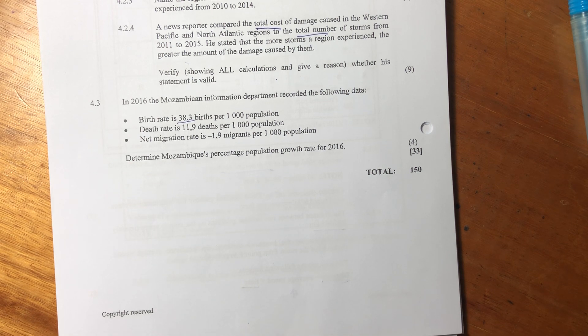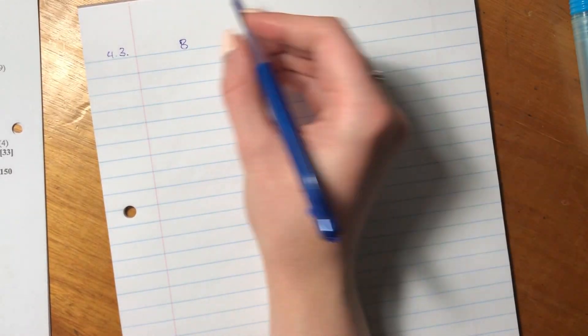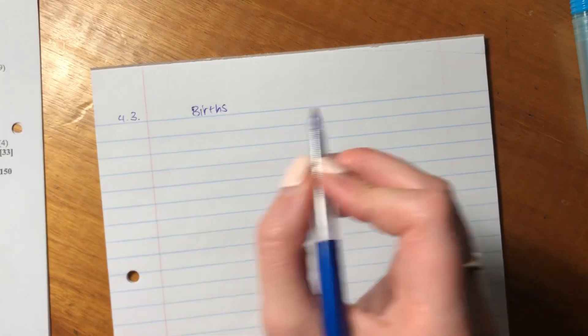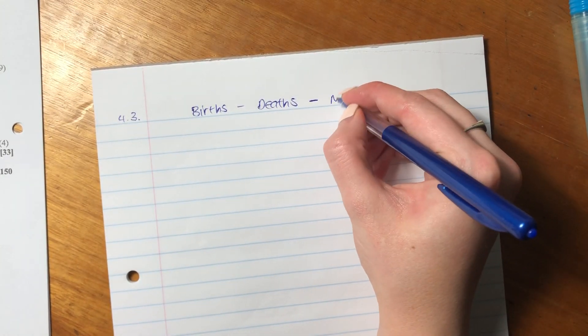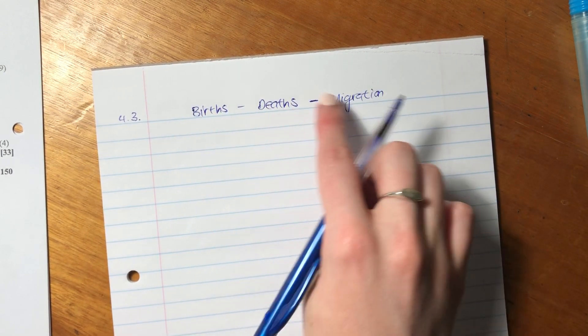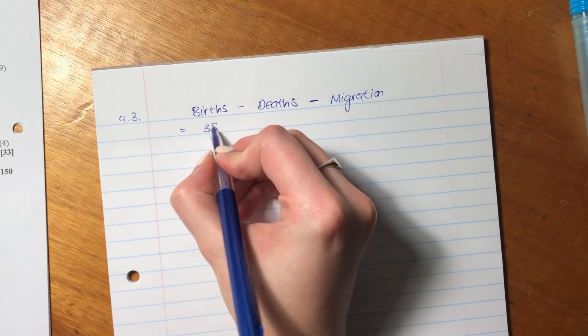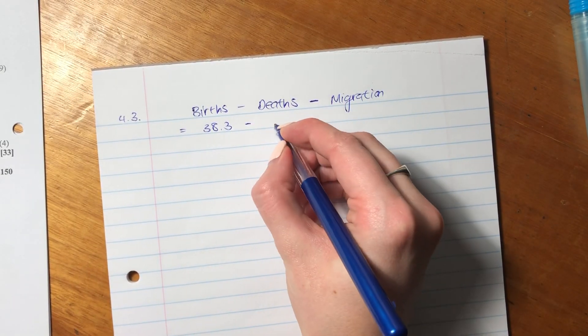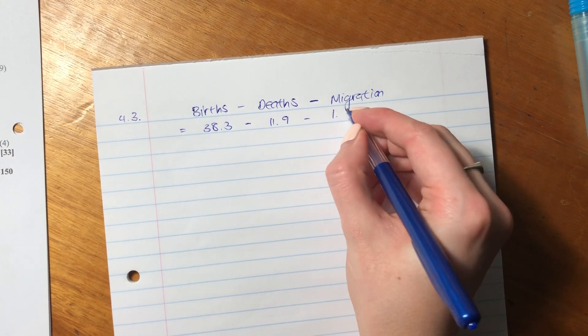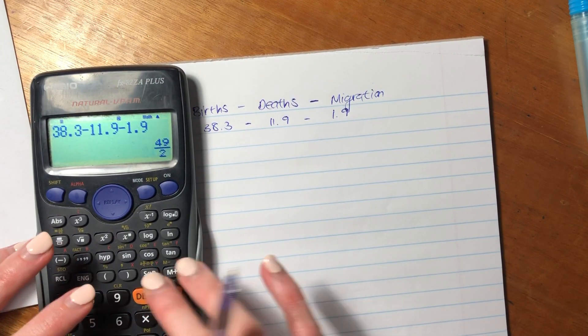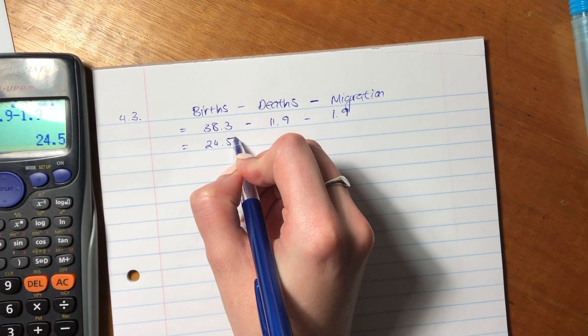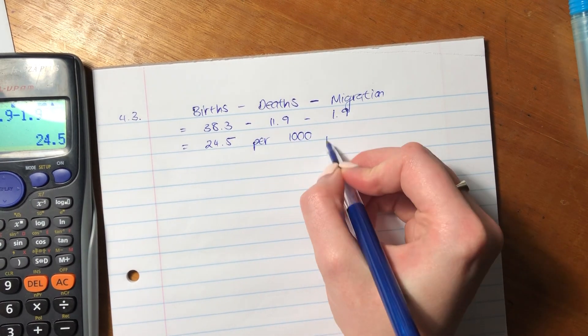So we're going to say births, because that's the new lives into the country, births, minus deaths, minus the migration. So it's basically those who are born, those who die, and those who leave the country. That would be the growth rate. So the births are 38.3 per 1,000. So all of these are per 1,000. The deaths are 11.9, and 1.9 is the immigration rate per 1,000 population. So the net growth is going to be 24.5 per 1,000 population.